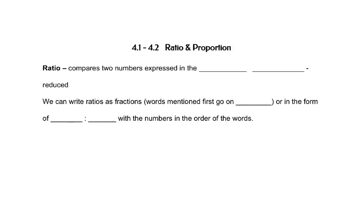A ratio compares two numbers expressed in the same units, and these need to be reduced. We can write ratios as fractions. The words mentioned first go on top, or in the form of something-to-something with this colon in the middle with the numbers in the order of the words.